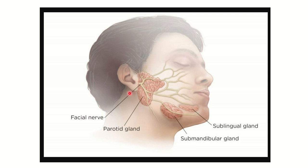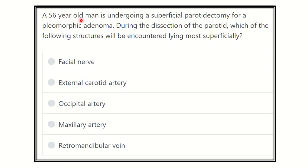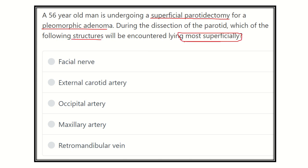Hello everyone, welcome to another question and answer session for the MRCS exam. A 56-year-old man is undergoing a superficial parotidectomy for a pleomorphic adenoma. During the dissection of the parotid, which of the following structures will be encountered lying most superficially? The options are: facial nerve, external carotid artery, occipital artery, maxillary artery, and retromandibular vein.